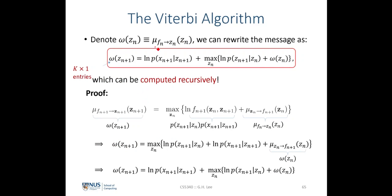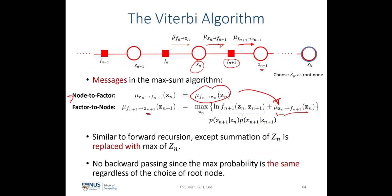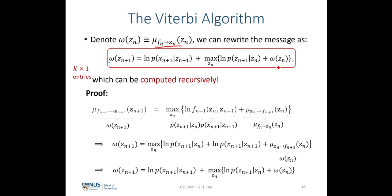We rewrite the message as omega(z_n), and omega(z_{n+1}) for the next step. The Viterbi algorithm becomes a simple recursive algorithm: compute the message over z_n by taking the max over z_n of the sum of the log transition probability — p(z_{n+1} | z_n) — plus the previous omega(z_n), then add the log emission probability p(x_{n+1} | z_{n+1}).